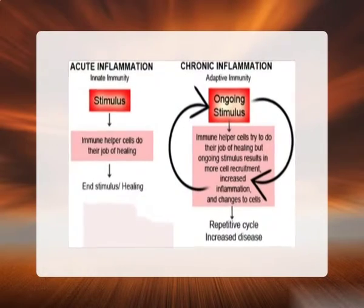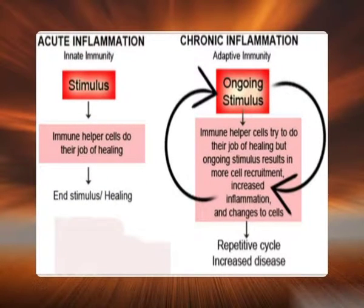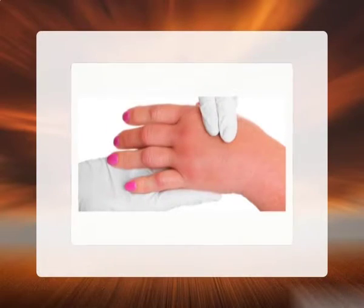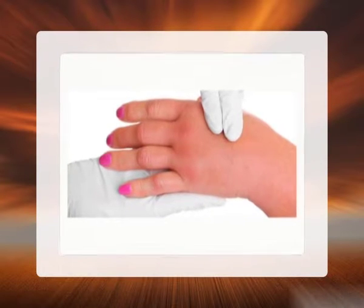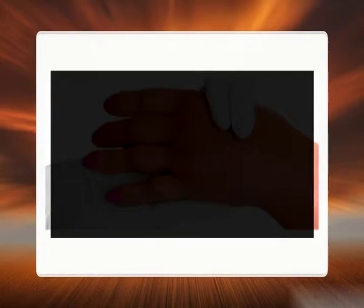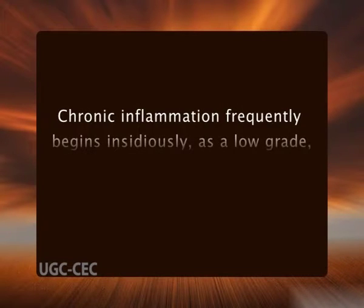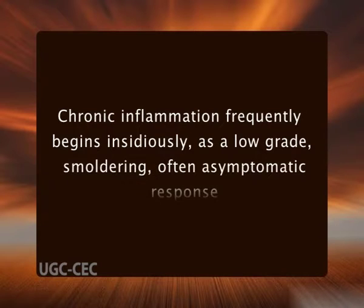Chronic inflammation is defined as a prolonged process in which tissue destruction and inflammation occur at the same time. Although difficult to define precisely, chronic inflammation is considered to be inflammation of prolonged duration in which active inflammation, tissue destruction, and attempts at repair are proceeding simultaneously. Chronic inflammation frequently begins insidiously as a low-grade, smoldering, often asymptomatic response.